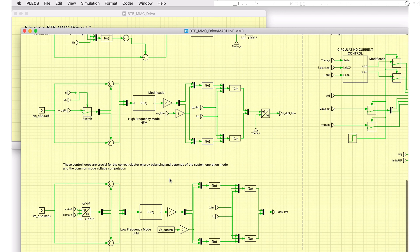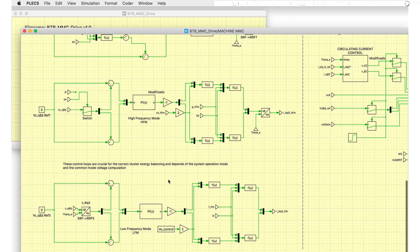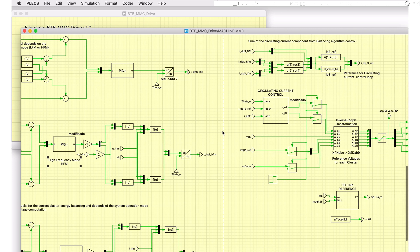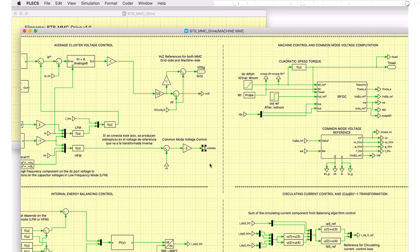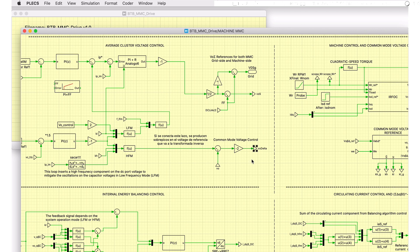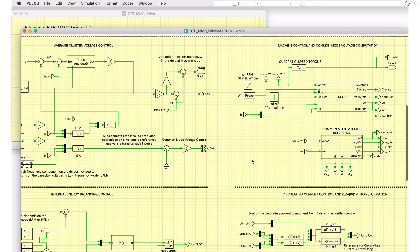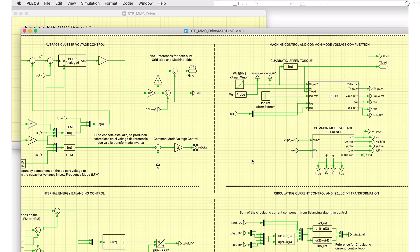The power balancing control of the machine-side MMC operates both in low-frequency mode as well as in high-frequency mode and provides a reference to the circulating current controller. The common-mode voltage control provides a common-mode reference value, an important mitigation variable in the control scheme, to the average and power-balancing control systems.